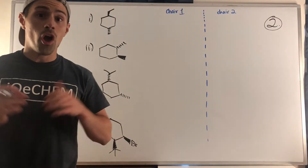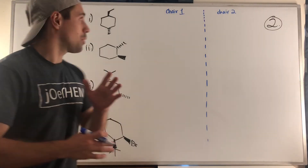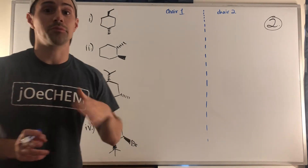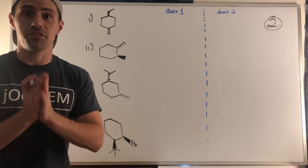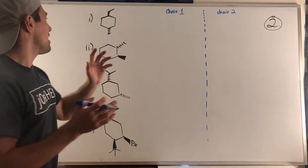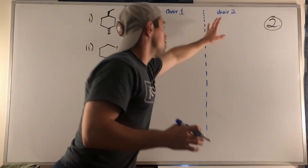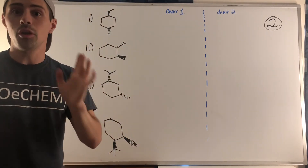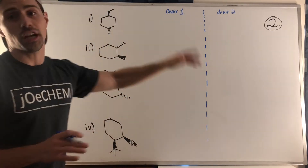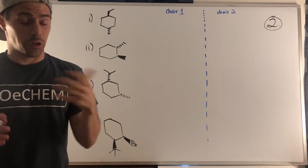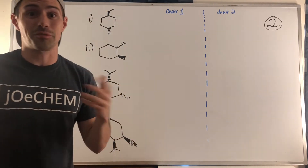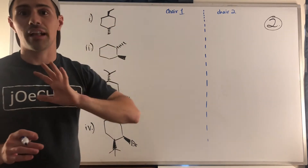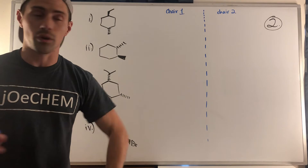On to problem two. We're given the flat bond-line representation of a cyclohexane ring with substituents, and our job is to draw both chair conformations for each ring. We're not picking which one is more stable — we're just drawing both chairs. This is practice drawing chairs and flipping them, which should be clockwork for us.